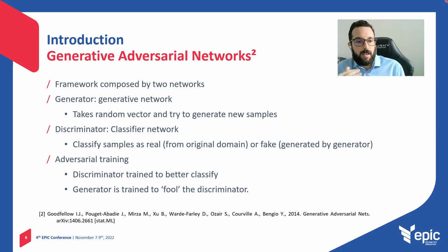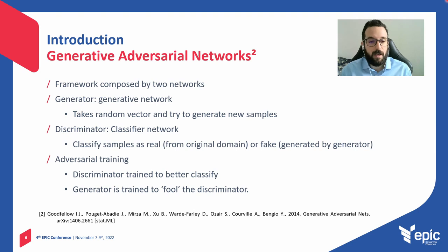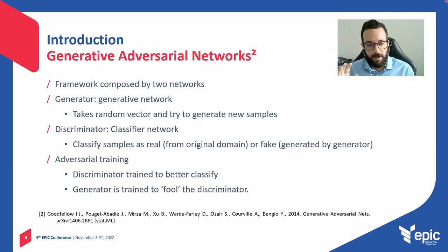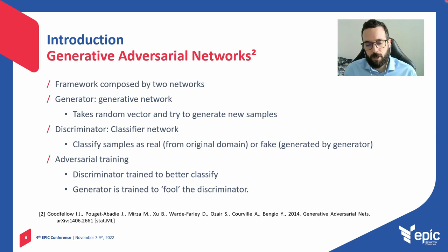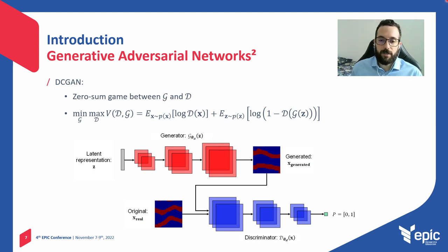A GAN is a network framework composed by two different networks: a generator, which takes random vectors and tries to generate new samples, and a discriminator, which tries to classify samples as real from the original domain or fake generated by the generator. The main feature of GANs is adversarial training, where the discriminator is trained to better classify, while the generator is trained to fool the discriminator. This can be explained as a zero-sum game, shown by a minimax problem.